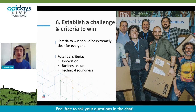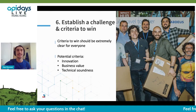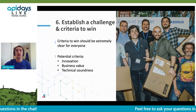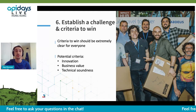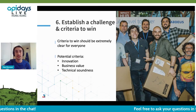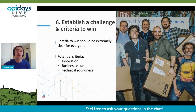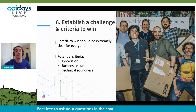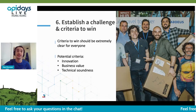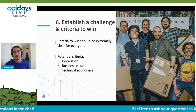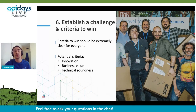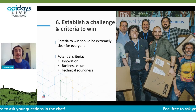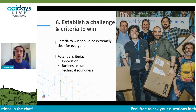Perhaps even more important than an interesting challenge is deciding how you are going to objectively choose a winner. I strongly recommend agreeing in advance on which specific areas participants will be judged on, and creating a score sheet for your jury members to follow. In our case, we always ask participants to build a working demo application, and then we grade teams on three areas: innovation, business value, and technical soundness. Make sure participants are also aware of this so they only focus on what is important.